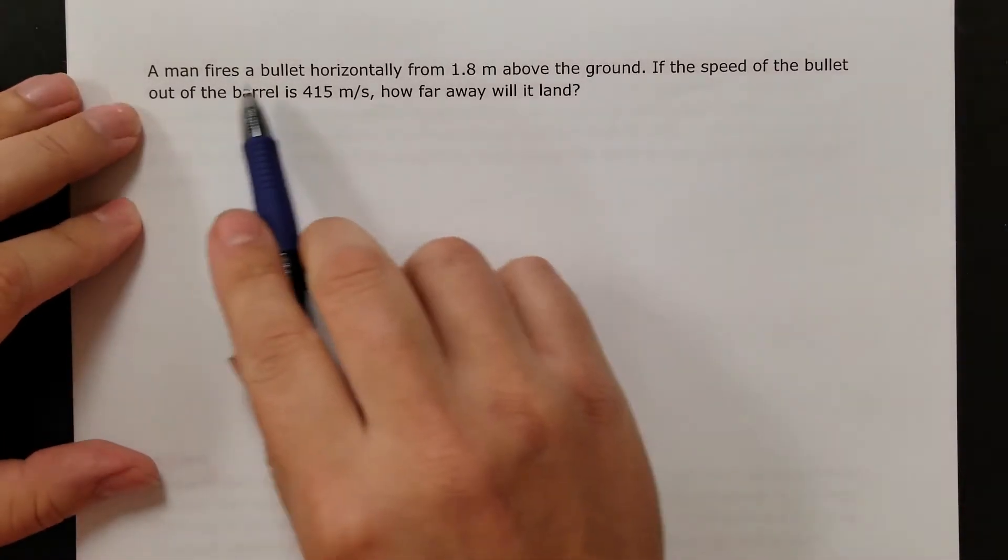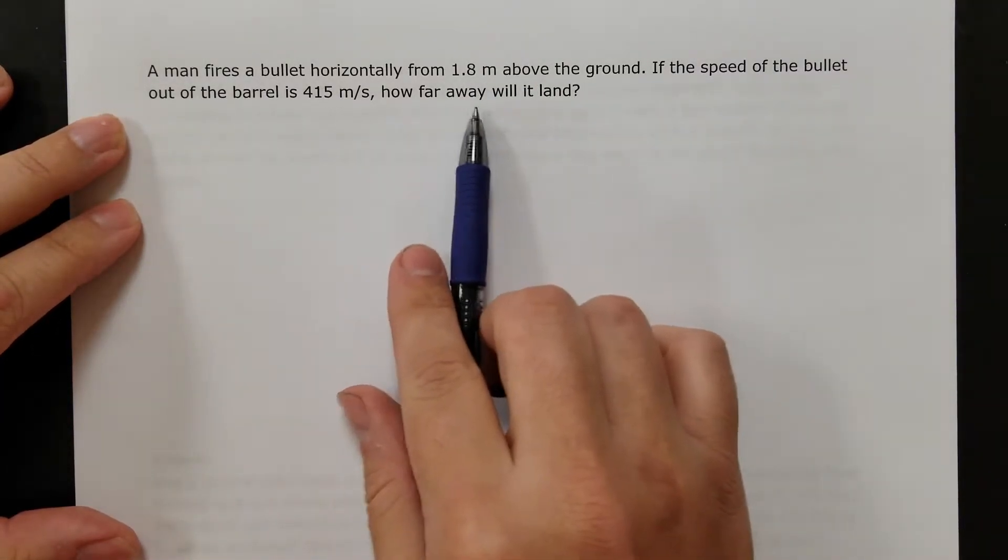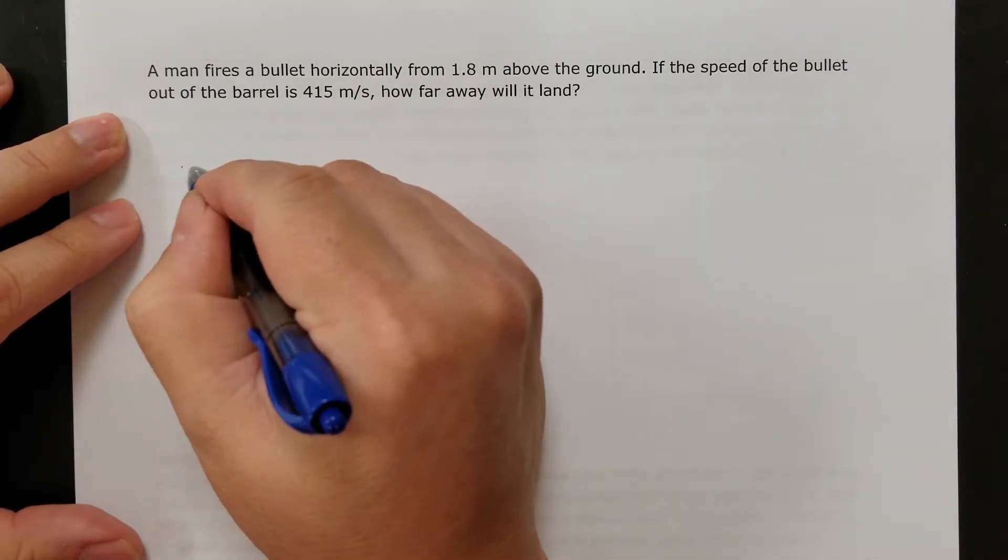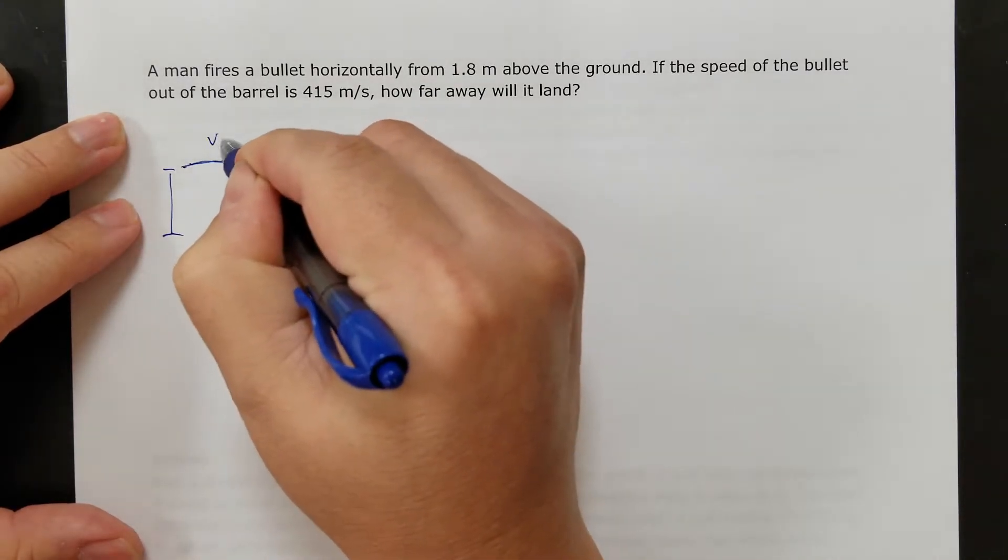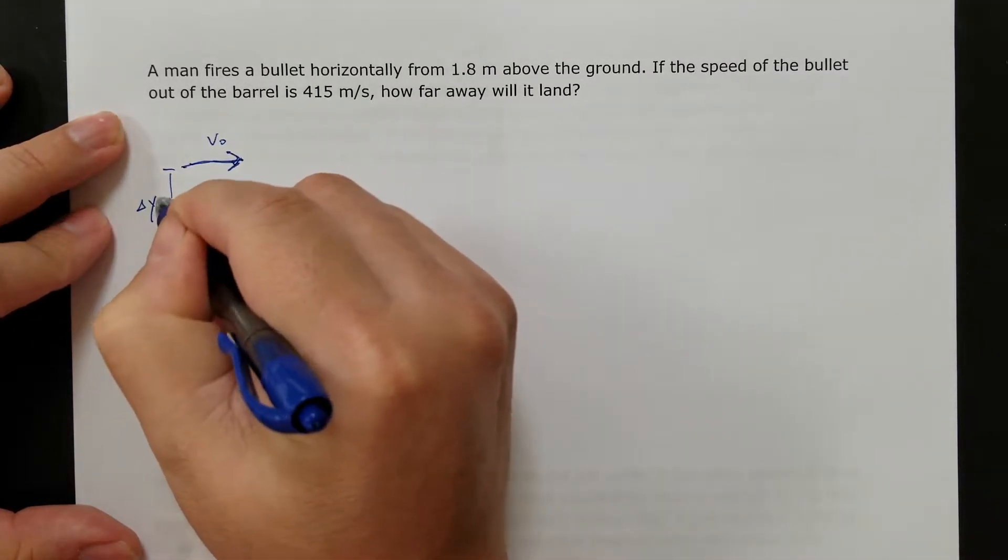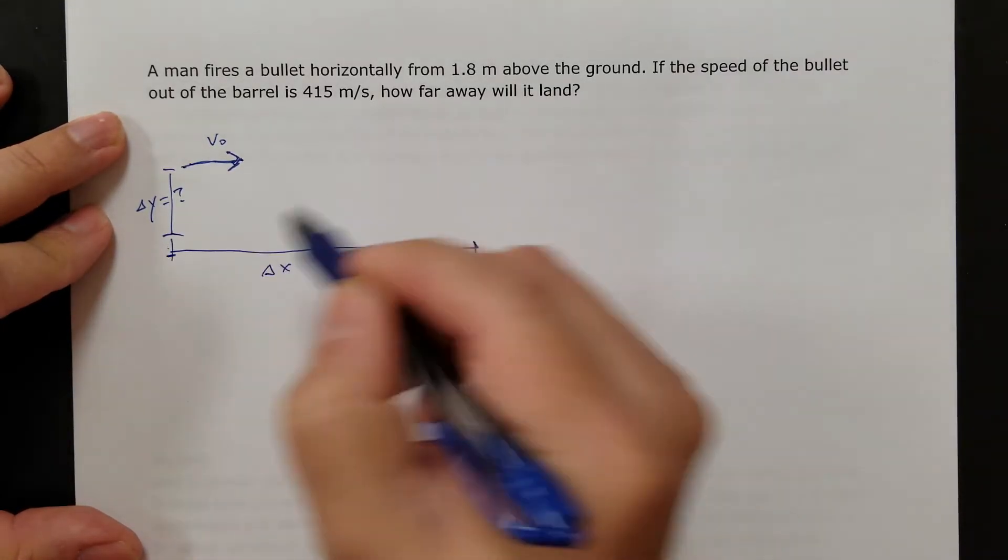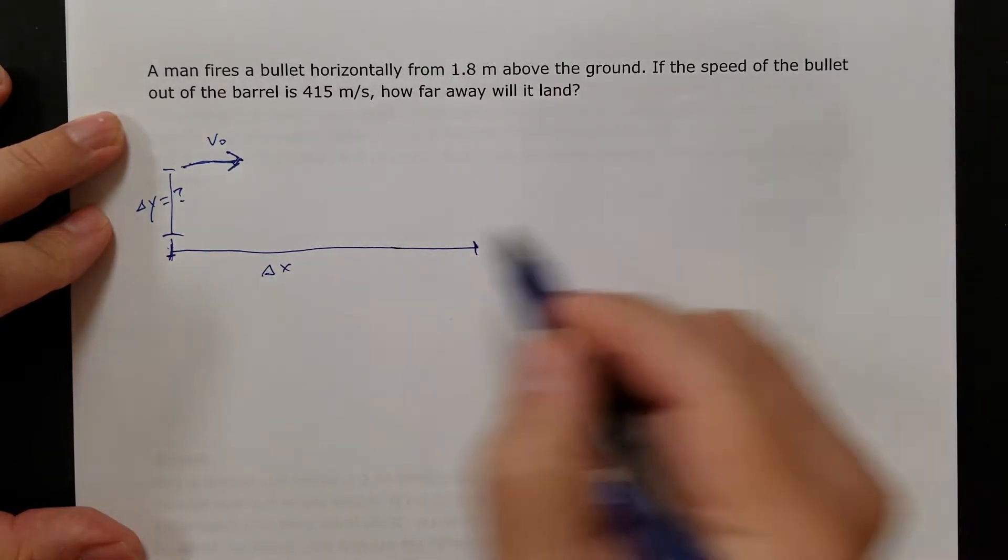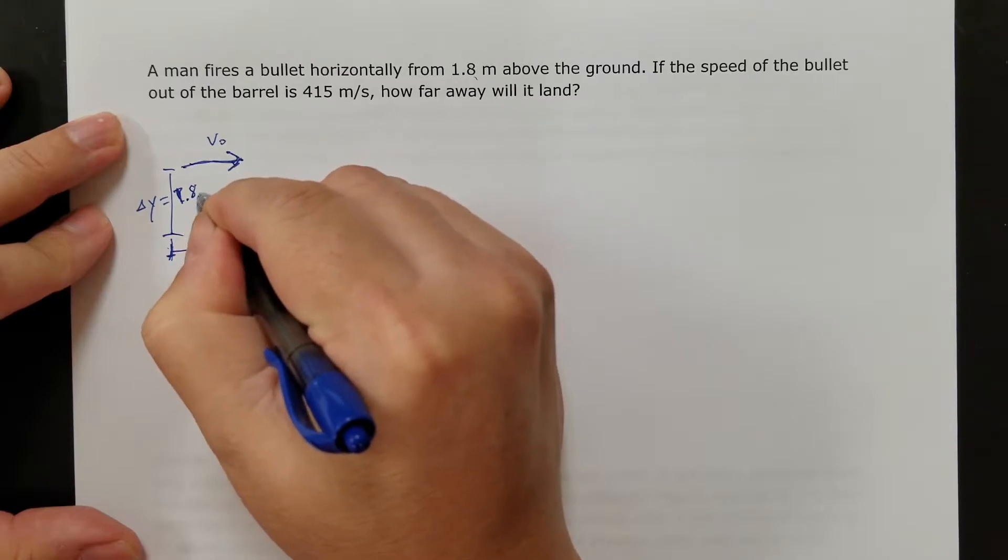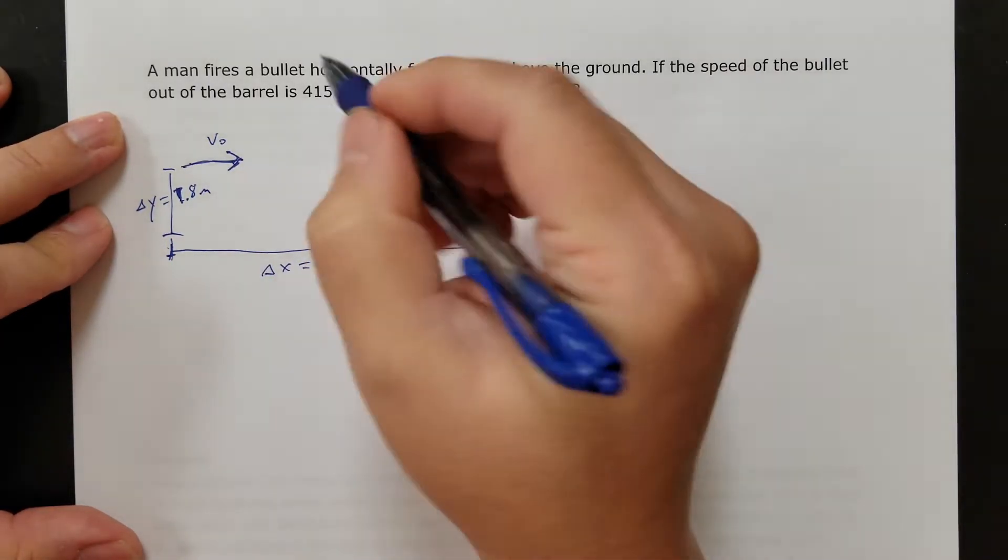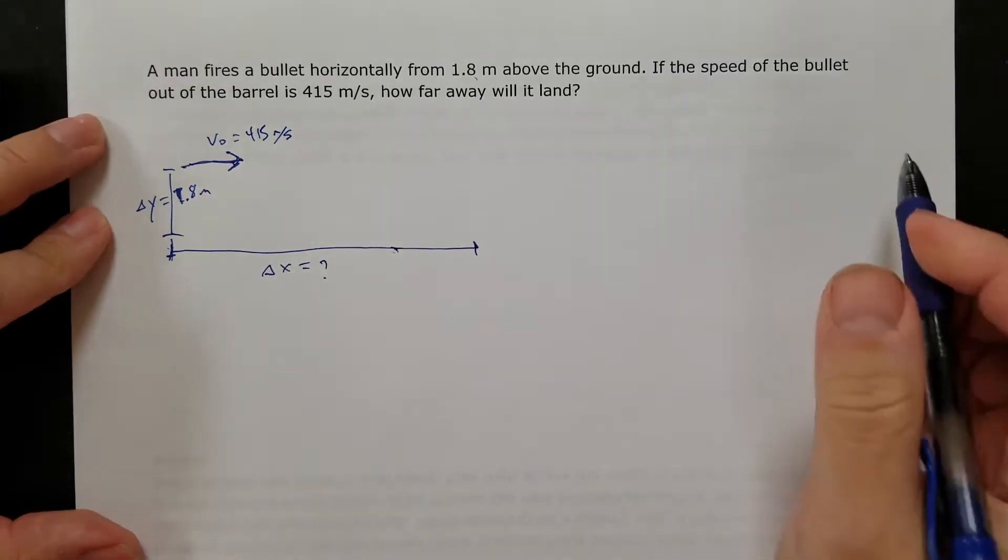Okay, next problem. Man fires a bullet horizontally from 1.8 meters above the ground. If the speed of the bullet was 415 meters per second, how far away does it land? All right, so this one doesn't have a little picture, but any of these, it really helps to draw a picture. So here's my initial velocity, here's my height, and here's my delta x. And I know my height is 1.8 meters, and my velocity is 415 meters per second. I'm trying to solve for horizontal distance.